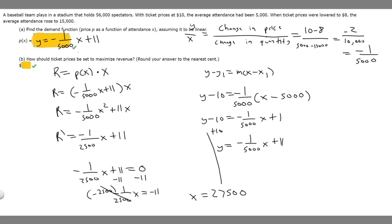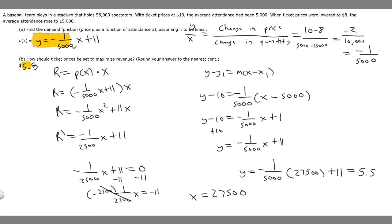Now we plug x equals 27,500 back into the demand function to find the price. So y equals negative 1 over 5,000 times 27,500 plus 11. That gives us negative 5.5 plus 11, which equals 5.5. So the ticket price should be set at $5.50 to maximize revenue. That's our answer to this problem.